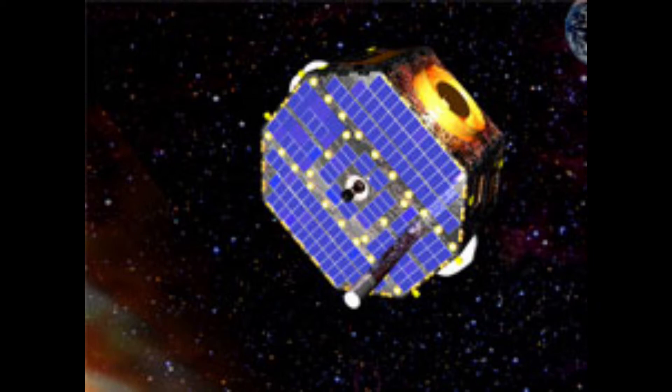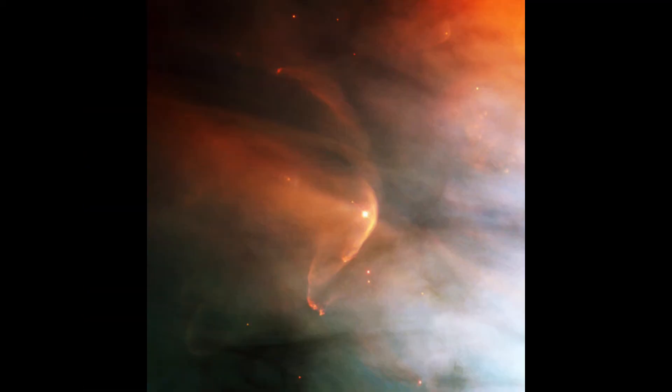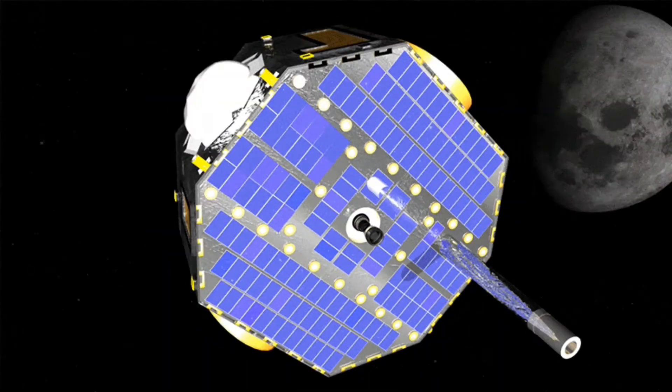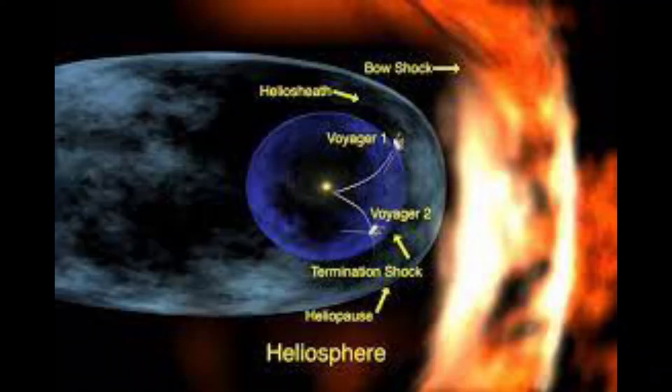But that does not mean we can't take a look. Reisenfeld and his team used data from NASA's Earth Orbiting Interstellar Boundary Explorer, called the IBEX satellite, an observatory that measures particles flung from the heliosphere in the very outer region of the heliosphere.